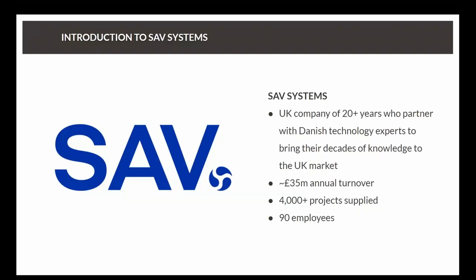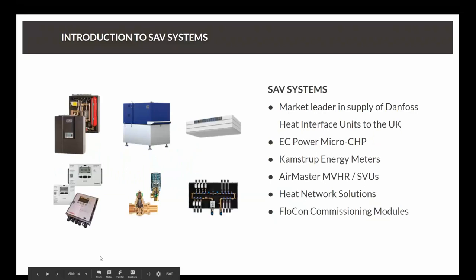So our main focus as a company is actually heat networks. We're market leaders in some of the technology used in heat networks. The company does a number of different product ranges, so the first is the Danfoss heat interface units. But we also do micro CHPs, Construpp energy meters, commissioning modules for fan coil units, and the AirMaster MVHR units which we also call SVUs or smart ventilation units.